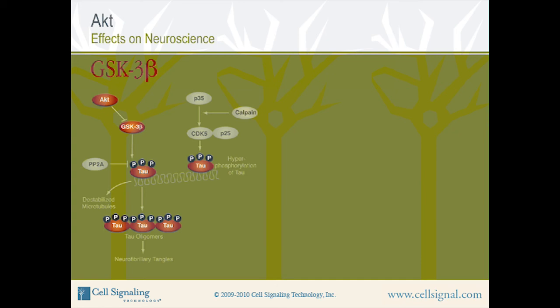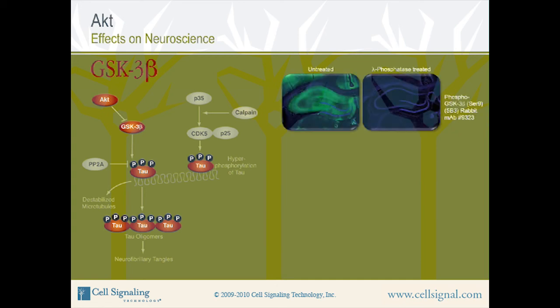This image shows IF analysis of rat hippocampus, untreated or lambda-phosphatase treated, using phospho-GSK3-beta serine-9 rabbit monoclonal antibody, product number 9323, in green. DNA has been labeled blue with DRAQ5. Note the loss of green signal with phosphatase treatment.